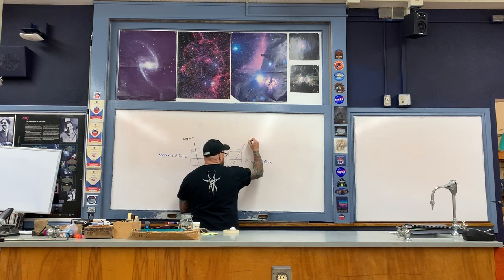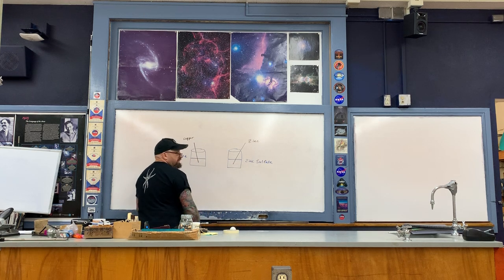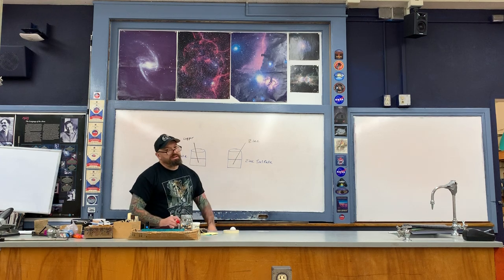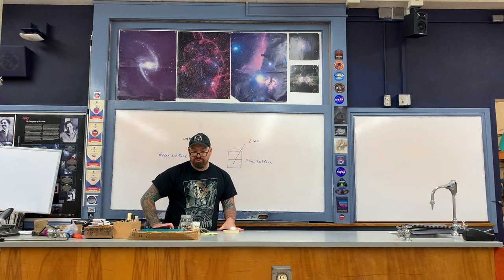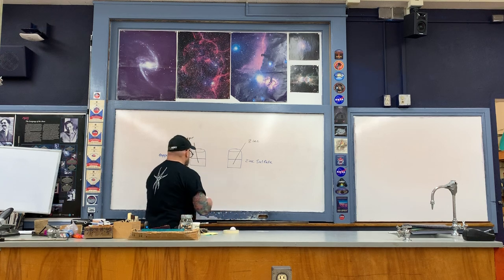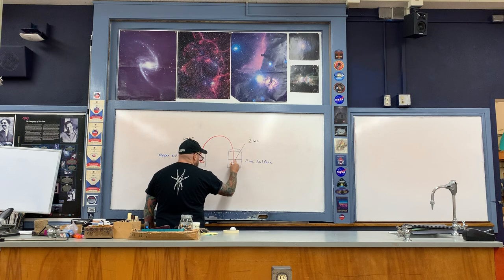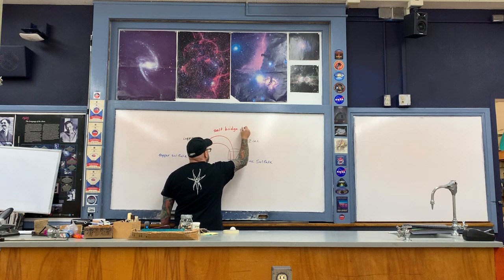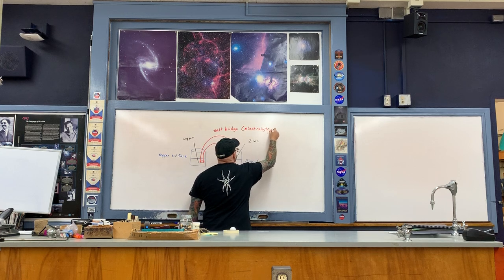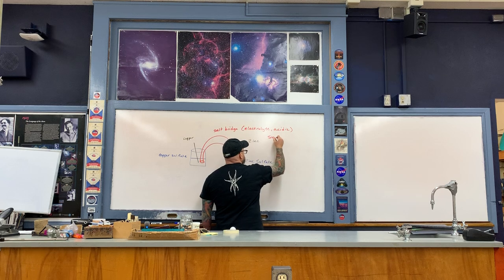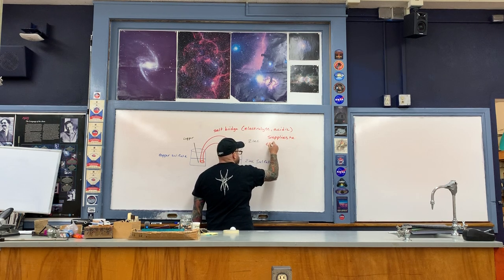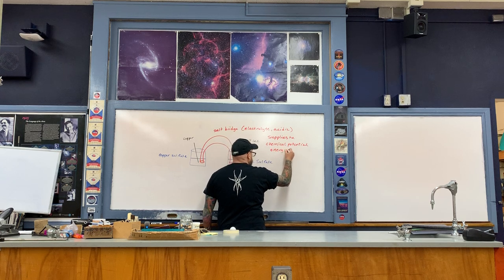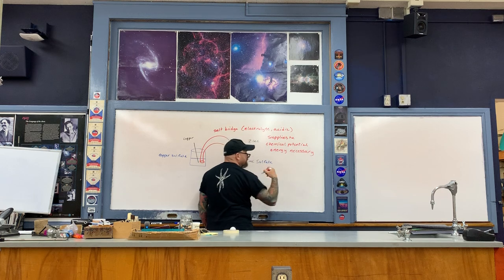This metal strip here is zinc. Supplying the chemical potential energy necessary to form a potential difference between the copper and the zinc is what's called a salt bridge. It's an electrolytic solution - slightly acidic. I used salt water, and that was in that curved test tube that you saw. The test tube itself is referred to as a salt bridge; it's an electrolyte - salt water, slightly acidic - and it supplies the chemical potential energy necessary to form a potential difference.